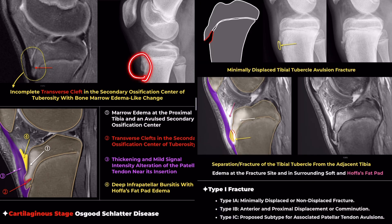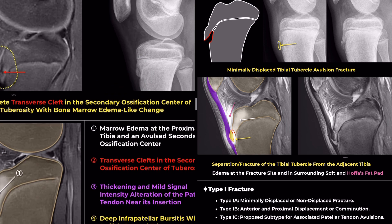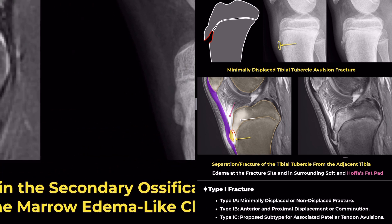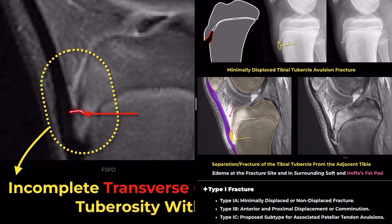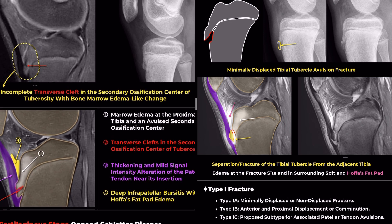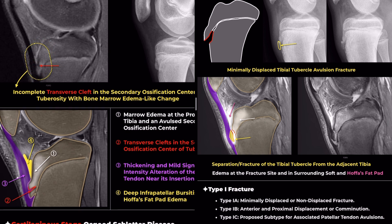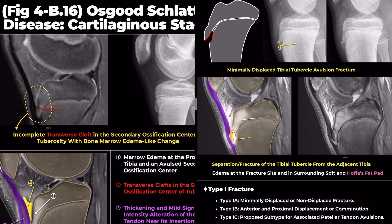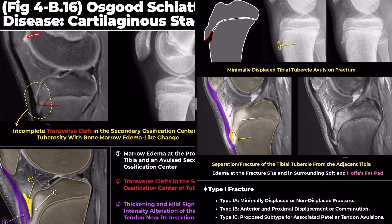On the other hand, in the left case, although not clearly visible on plain radiographs, the MRI shows incomplete transverse clefts in the secondary ossification center of the tuberosity. There is also mild marrow edema at the proximal tibia and a secondary ossification center. While these two patients may look similar, the left case is actually cartilaginous stage Osgood-Schlatter disease.